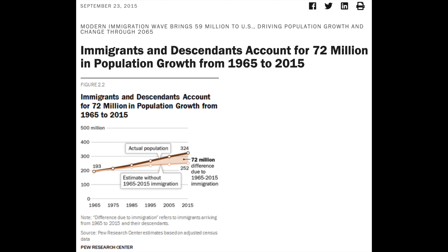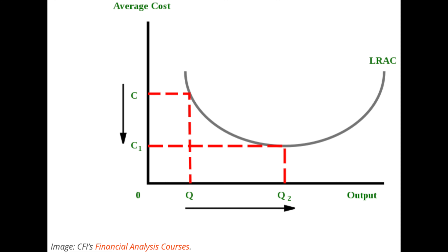The demand effect should be considered as well. A growing population increases the demand for products in the country, which leads to job creation and wage increases, meaning that natives also gain from this effect. Furthermore, when the size of the market increases — be it due to immigration or natural population growth — the economy can exploit economies of scale and thus operate more efficiently.